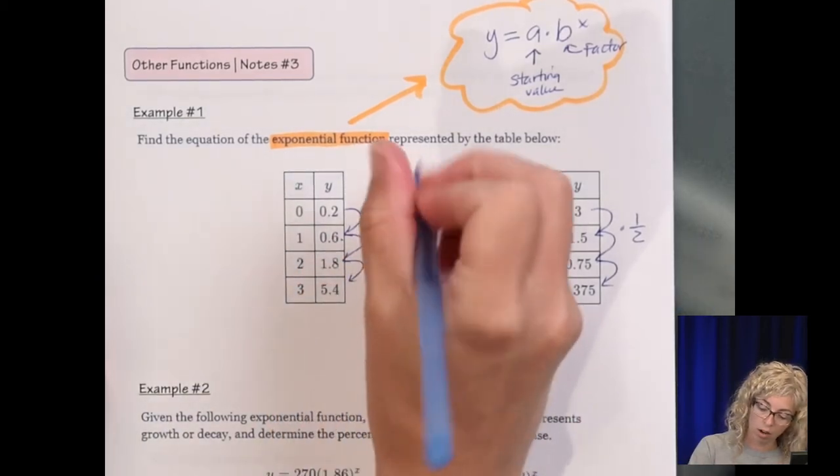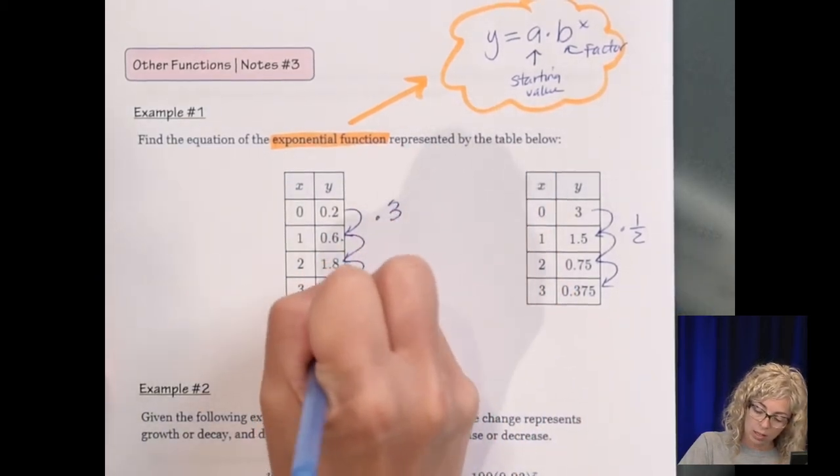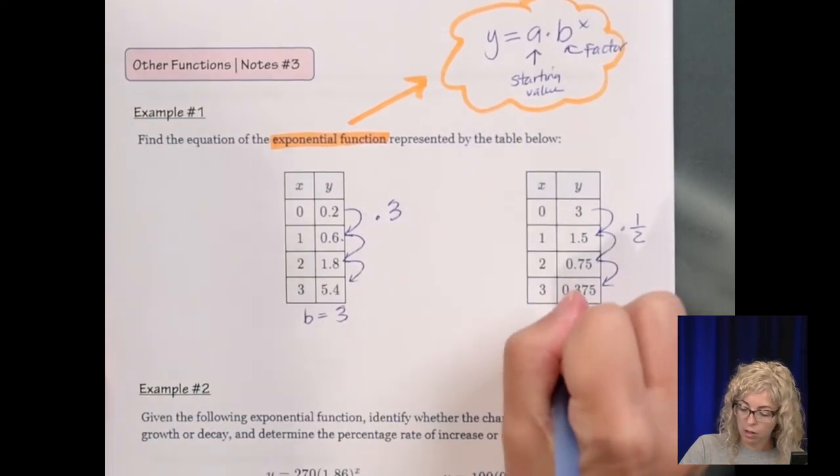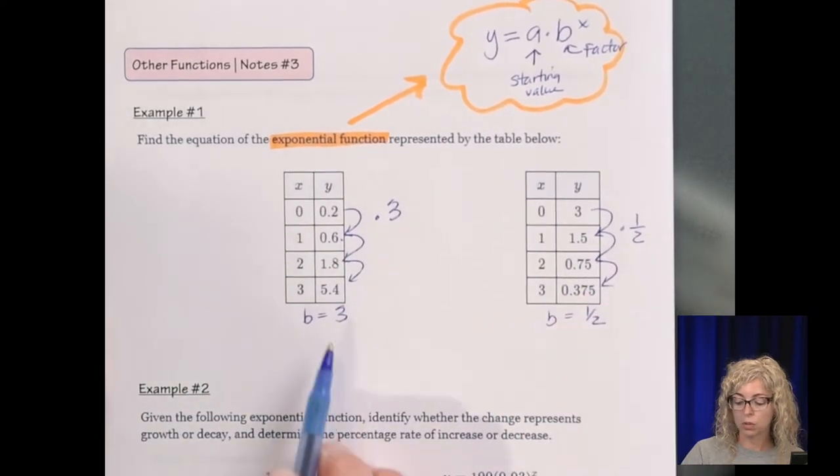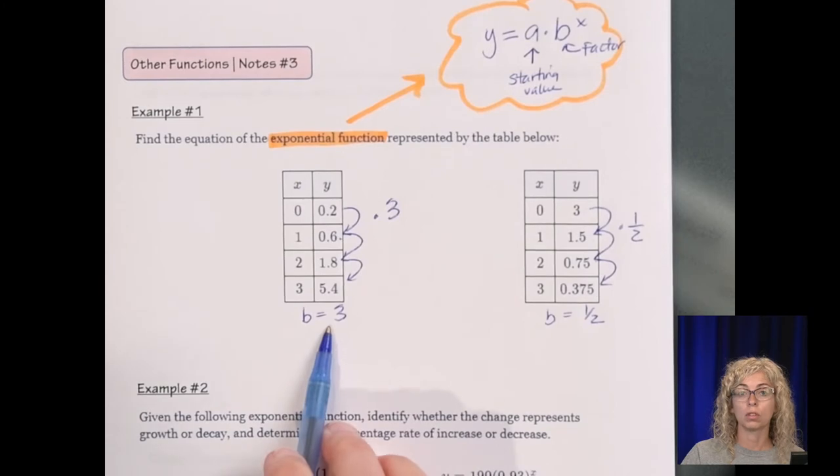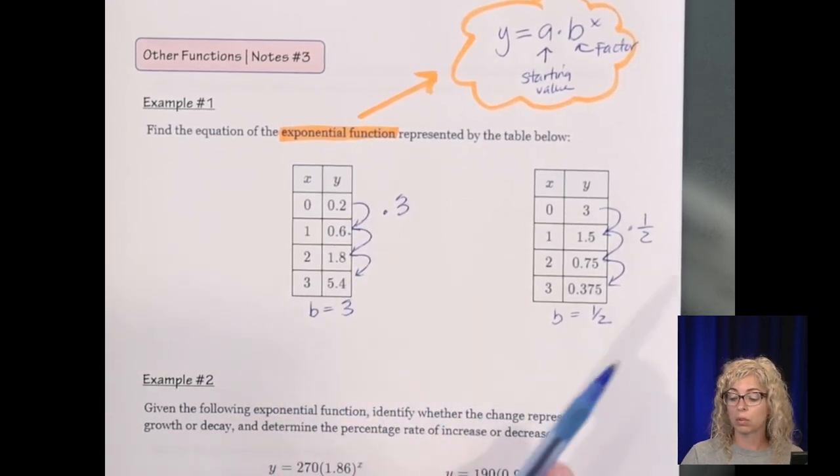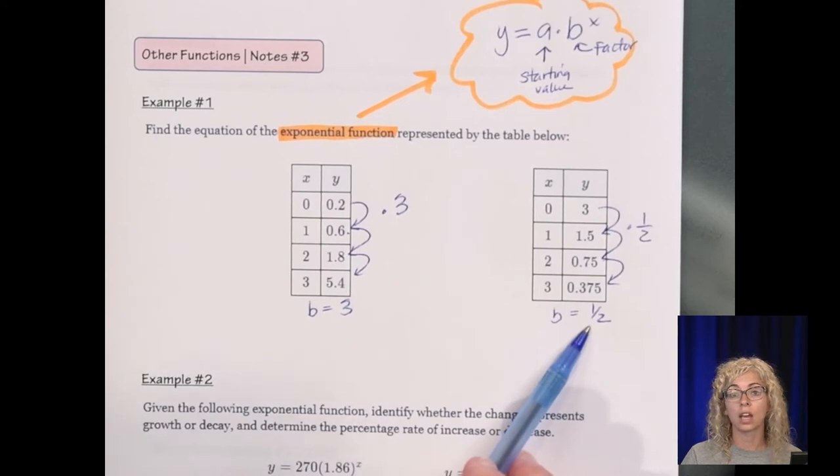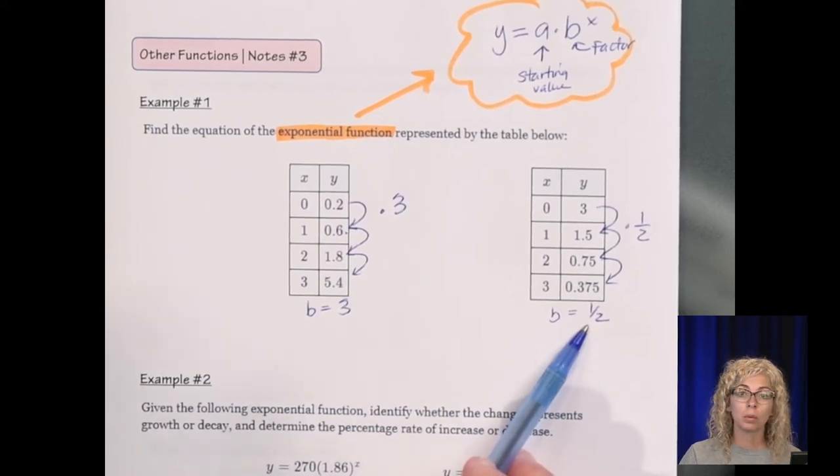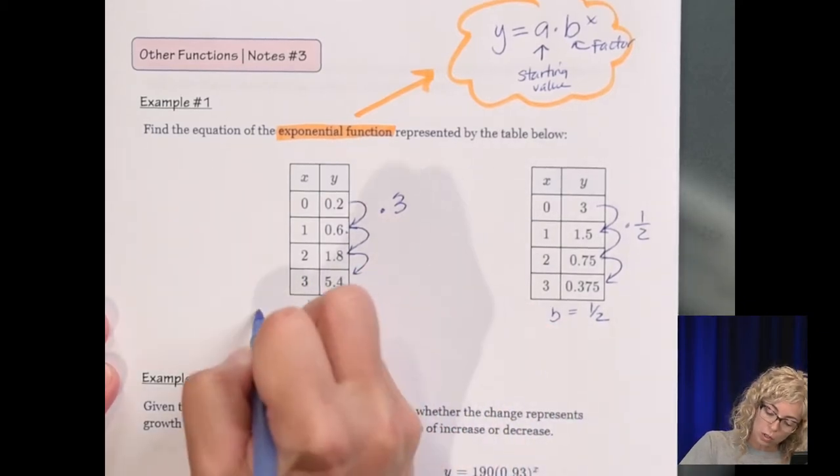So in this case, our B is 3. Here our B is 1 half. So this is going to represent growth. As you can see, it's getting bigger. A B value greater than 1 is growth. B value less than 1 is decay. If it was 1, then we wouldn't see any change, right?